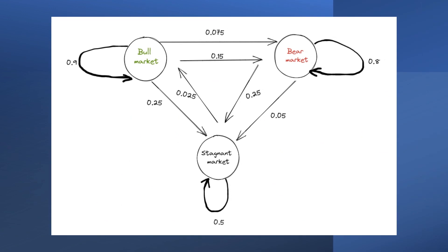Consider the following patterns from historical data in a hypothetical market with Markov properties. There is a 90% probability that another bullish week will follow a week defined by a bull market trend. Furthermore, there is a 7.5% possibility that the bullish week will be followed by a negative one, and a 2.5% chance that it will stay steady.